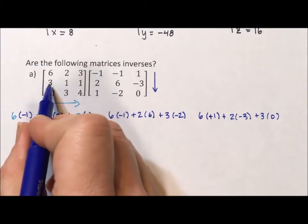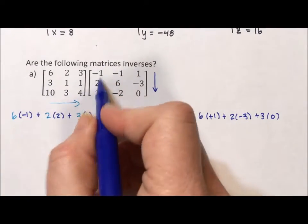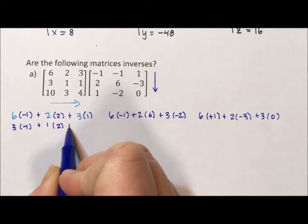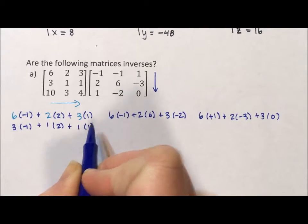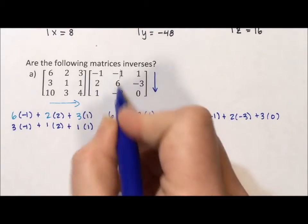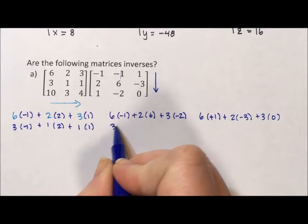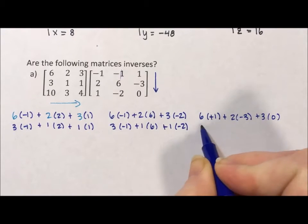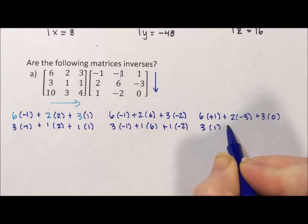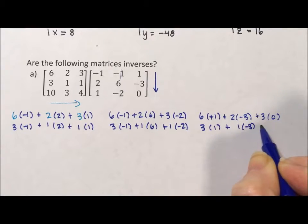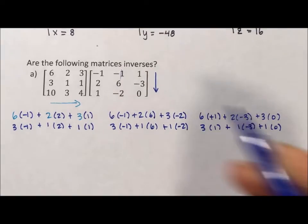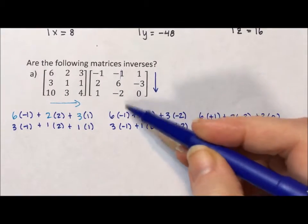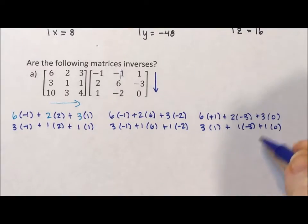For our second row, it's the second row first column: 3 times negative 1 plus 1 times 2 plus 1 times 1. Then second row second column: 3 times negative 1 plus 1 times 6 plus 1 times negative 2. And then 3 times 1 plus 1 times negative 3 plus 1 times 0. Notice we're filling out in the parentheses negative 1, 2, 1; negative 1, 6, negative 2; 1, negative 3, 0. Those are the columns.